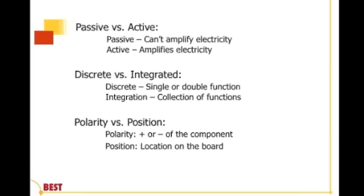We also have passive and active components. Passive components are things like capacitors or resistors — they don't amplify electricity or make logic decisions; they reduce current, increase voltage, stabilize voltage, or do some filtering. Then we have active components that have active silicon on the inside of the packaging, and they can amplify electricity or make logic decisions. Those are active devices, and we treat those differently.